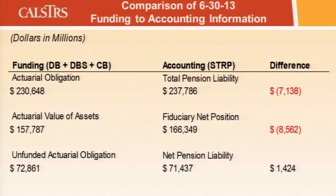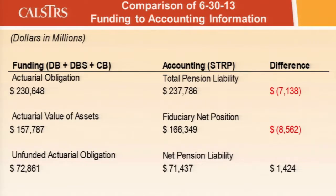As of June 30, 2013, there is an actuarial valuation accepted by the board in April 2014, and also a calculated total pension liability. The comparison shows the total actuarial obligation, actuarial value of assets, and unfunded actuarial obligation alongside the total pension liability, fiduciary net position, and calculated net pension liability. The differences are non-intuitive. All numbers should be correlated either with the actuarial evaluation — the sum from a funding perspective of DB, DBS, and CB — or with the information presented in the financial statements.